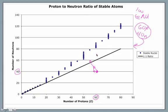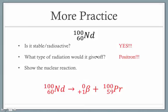So we've identified neodymium-100 as unstable and radioactive. Positron emission is the most likely type of radiation, as it fixes this type of instability. The nuclear reaction shows neodymium-100 giving off a positron, resulting in the new atom praseodymium-100.